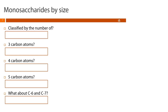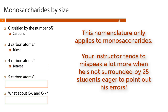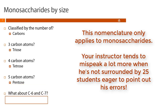We classify monosaccharides by size based on the number of carbon atoms they contain. A three-carbon carbohydrate is a triose, a four-carbon is a tetrose, a five-carbon is a pentose. Go ahead and pause this video and see if you can tell me what a six-carbon and a seven-carbon carbohydrate would be called.